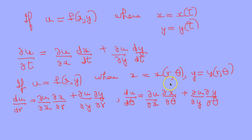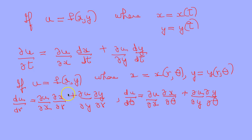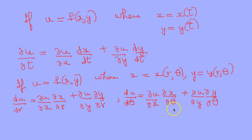Going one step further, if x is a function of r and θ and y is also a function of r and θ, then ∂u/∂r = (∂u/∂x)(∂x/∂r) + (∂u/∂y)(∂y/∂r), and ∂u/∂θ = (∂u/∂x)(∂x/∂θ) + (∂u/∂y)(∂y/∂θ).